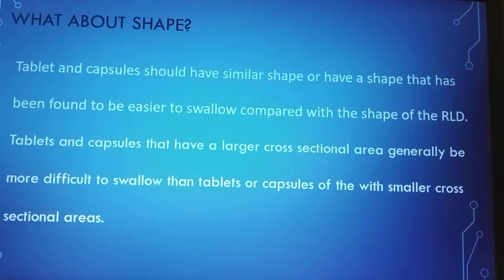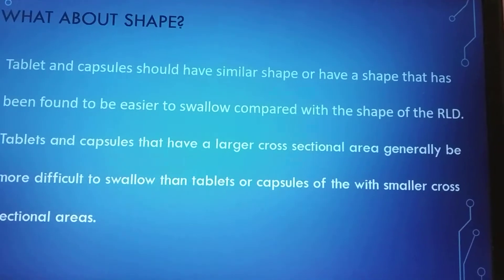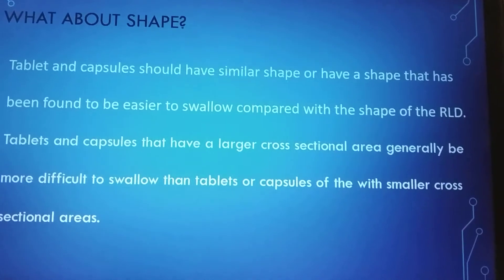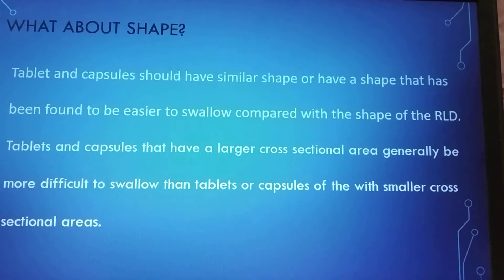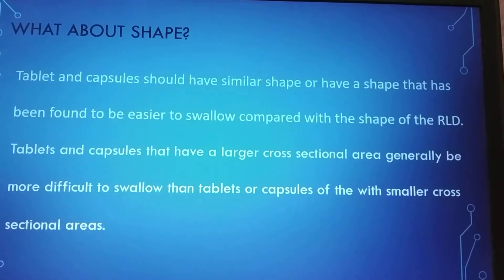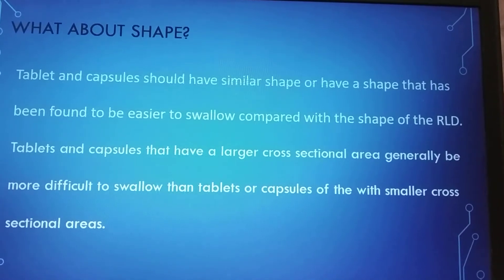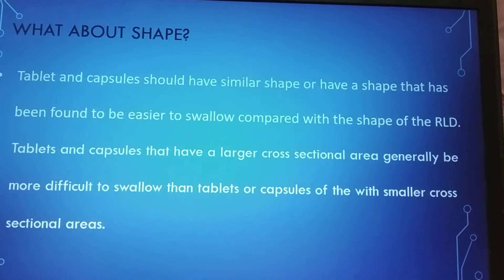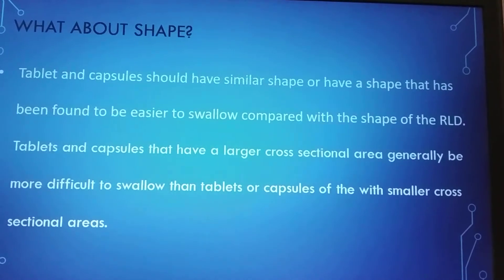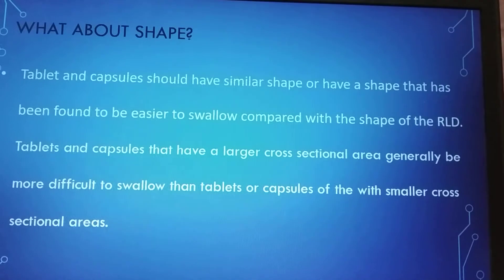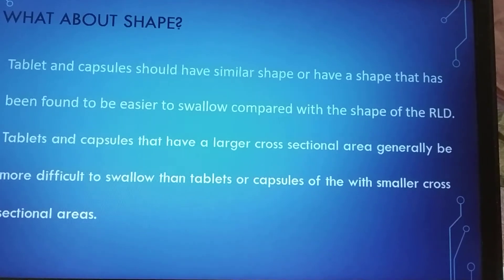Shape also plays an important role in swallowability. USFDA mandates that the generic tablet or capsule should have a similar shape to the RLD, or a shape that has been found to be easier to swallow. Tablets and capsules with a larger cross-sectional area are considered more difficult to swallow than those with a smaller cross-sectional area.